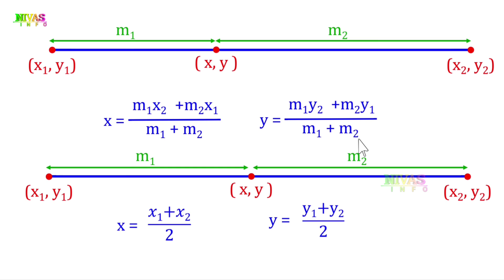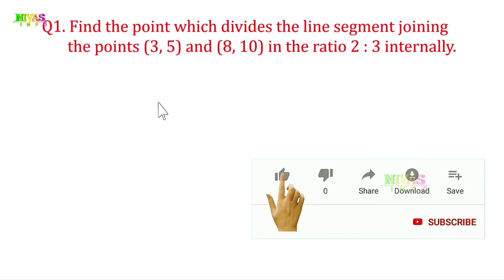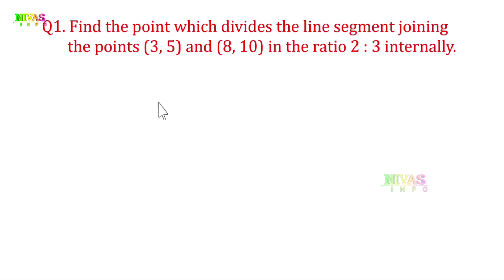Here is a problem: find the point which divides the line segment joining the points (3, 5) and (8, 10) in the ratio 2:3 internally. The line segment is divided in ratio 2:3, so one side is 2 parts and one side is 3 parts. The first point is (3, 5) and the second point is (8, 10). So x1 = 3, y1 = 5, x2 = 8, y2 = 10, and m1 = 2, m2 = 3.